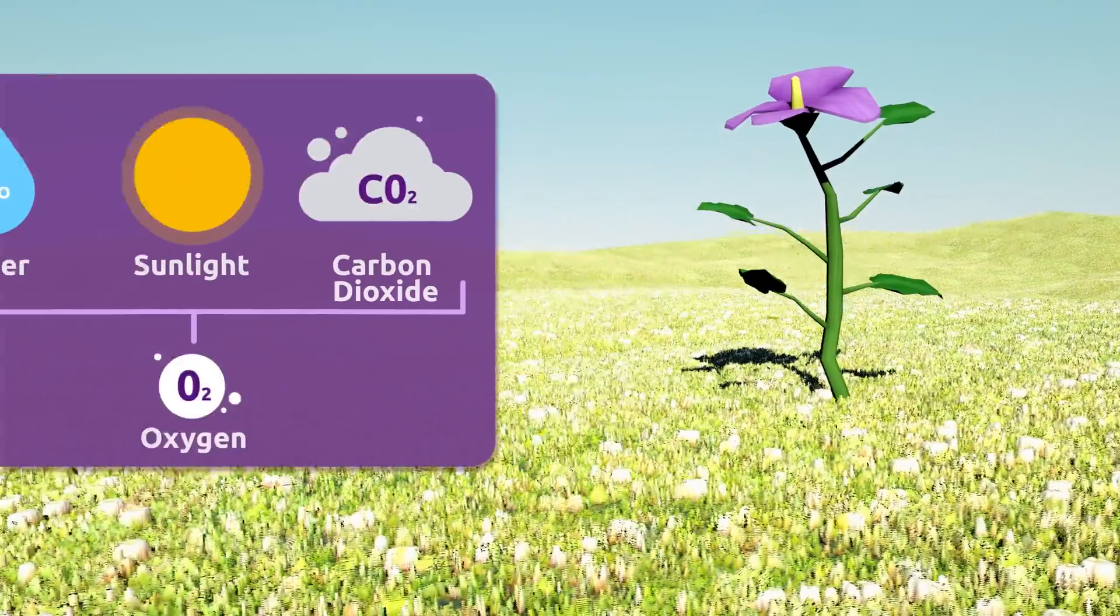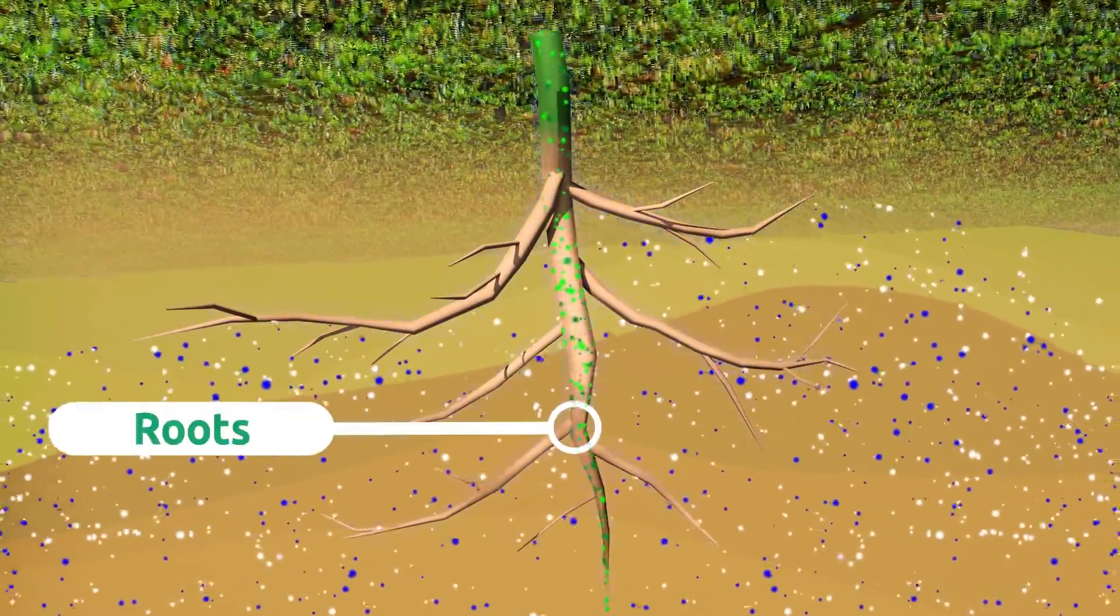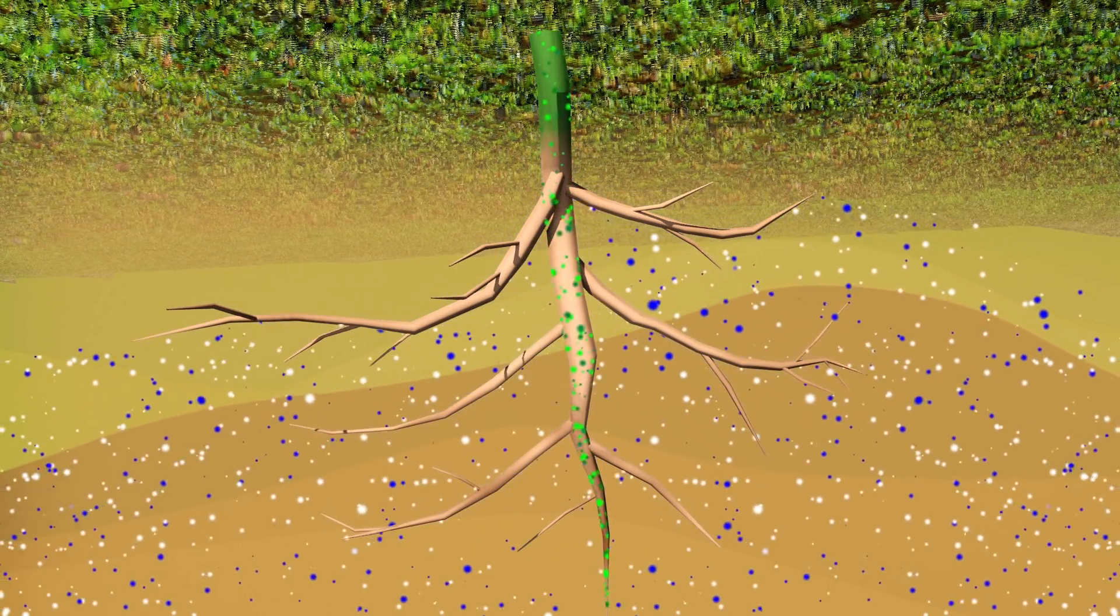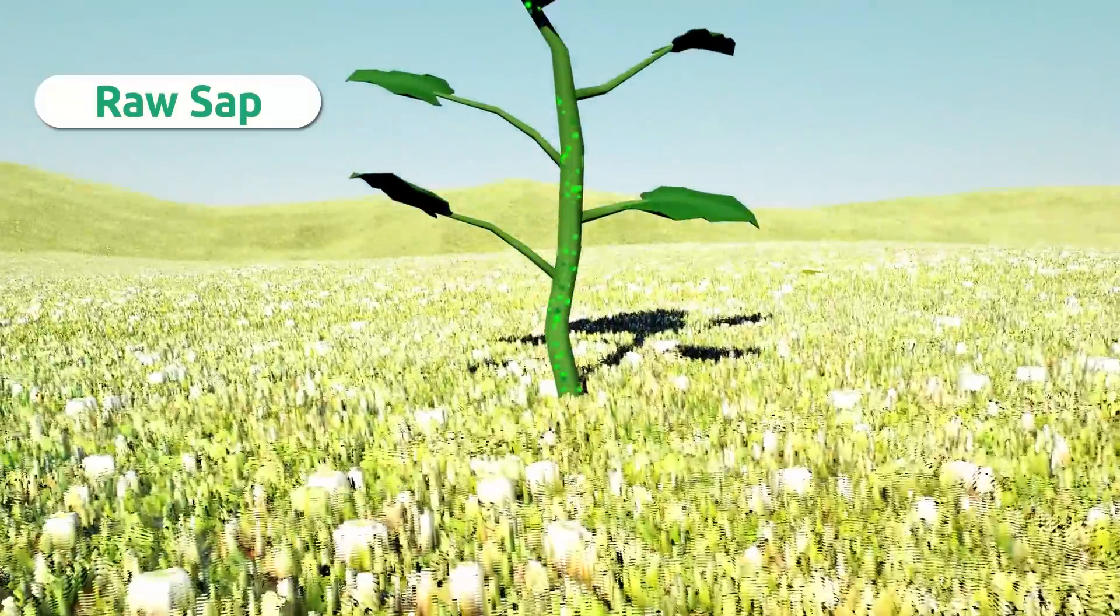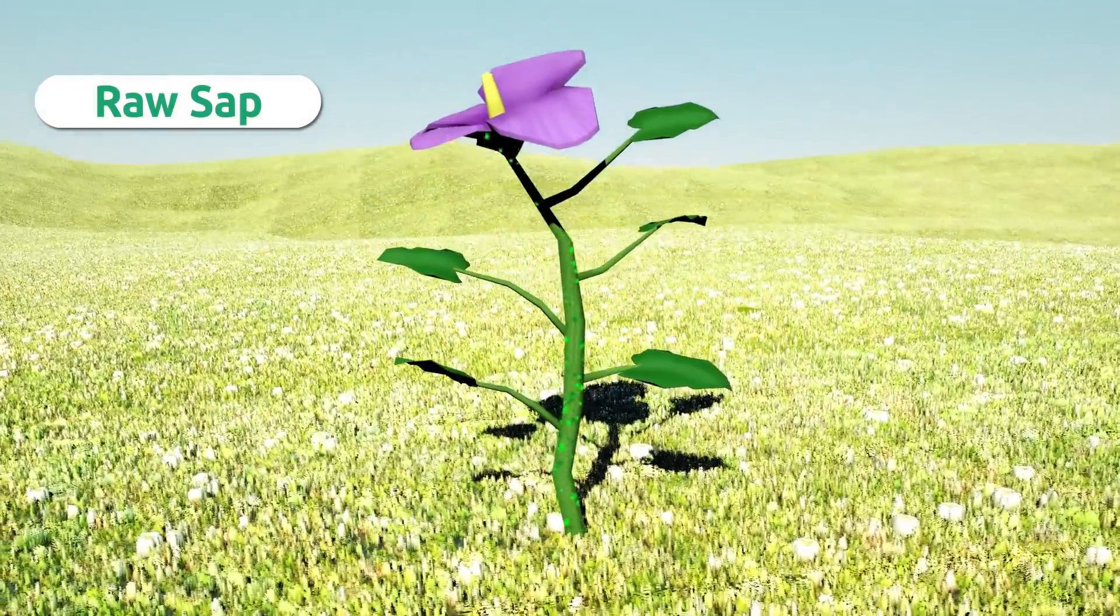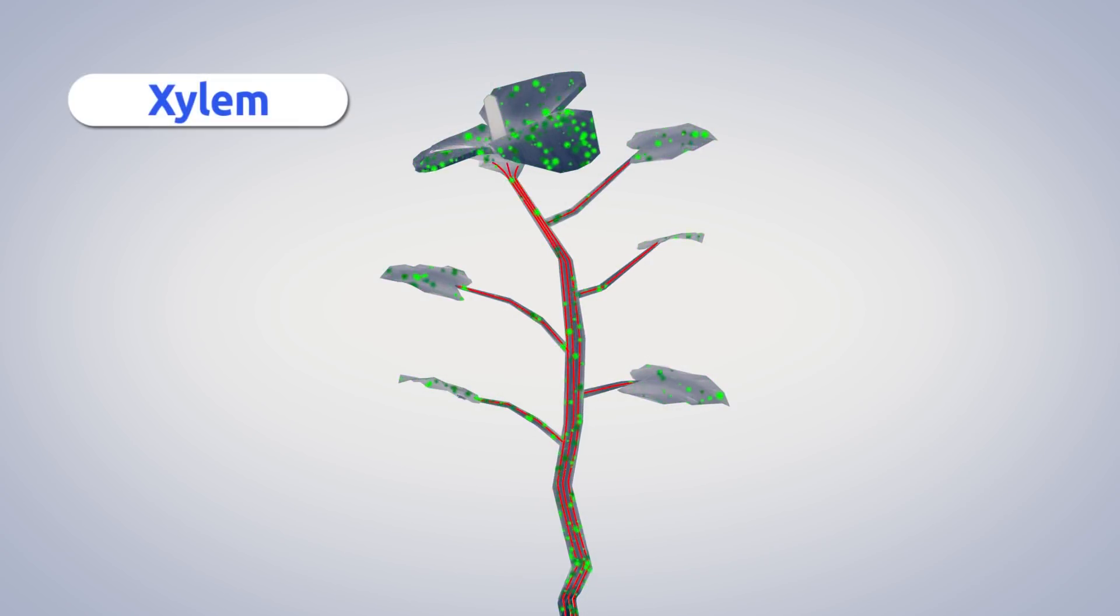The photosynthesis cycle starts with plants absorbing water and mineral salts from the soil through their roots. This fluid mixture is called raw sap. Raw sap flows up the roots to the stem and travels through the rest of the plant to the leaves with the help of woody transport tissues called xylem.